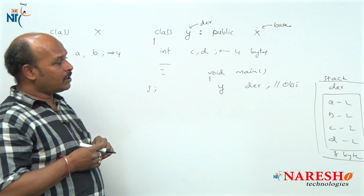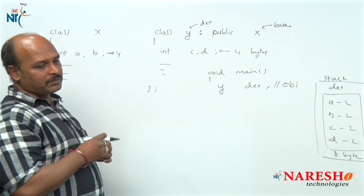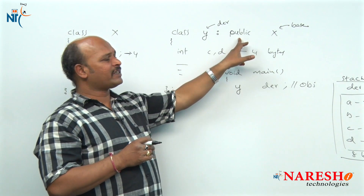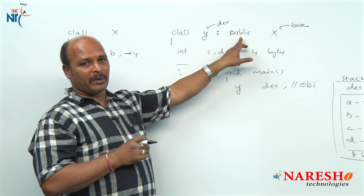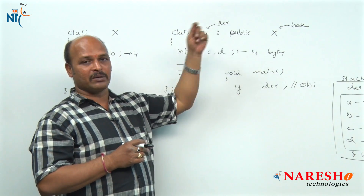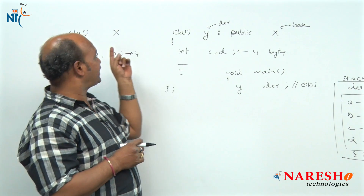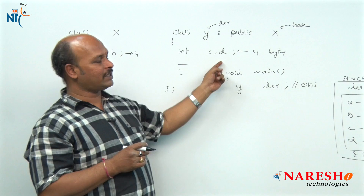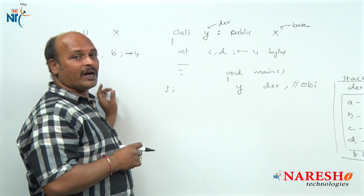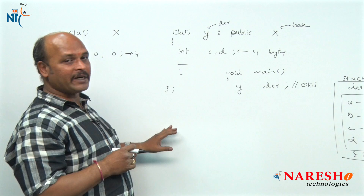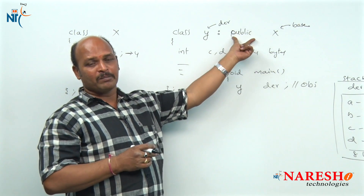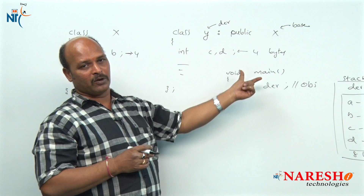Now the point is how the members are used in derived classes based on the derivation mode. The availability of members in the derived class depends on the derivation mode. The accessibility of base class members is determined by whether the visibility label is public, private, or protected.